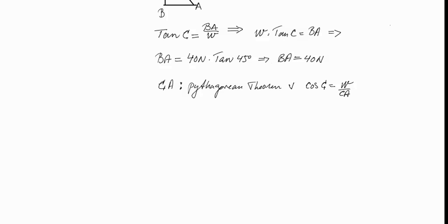I now have to find CA. And I can either do it by using Pythagorean Theorem, or I can use cos C. Because as you remember, the adjacent side to C was W, and CA is the hypotenuse, and that is called for cosine. So what I get is that CA is 56.6 N.